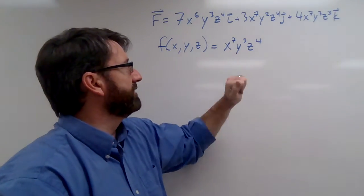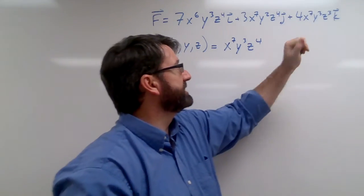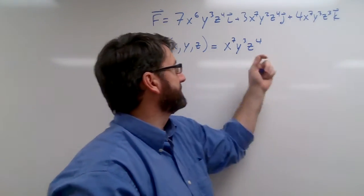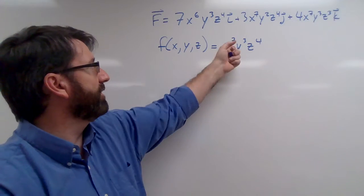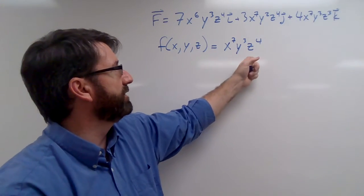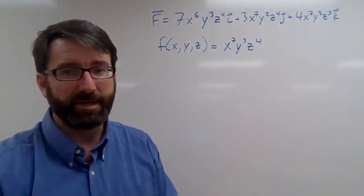If we took the derivative of this with respect to z, we would get this. We bring down that 4, 4x to the 7th, y cubed, z cubed, and that's exactly what that would be.